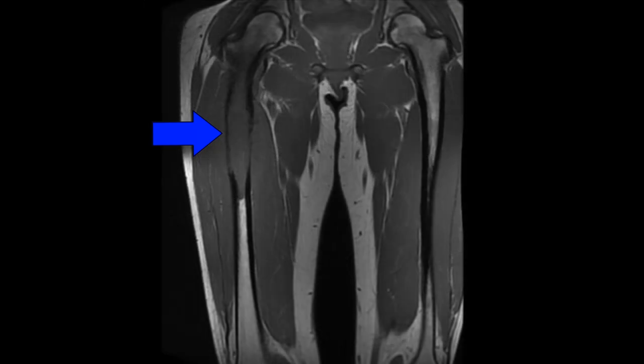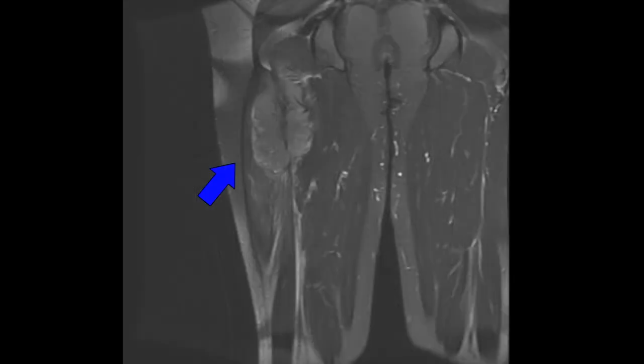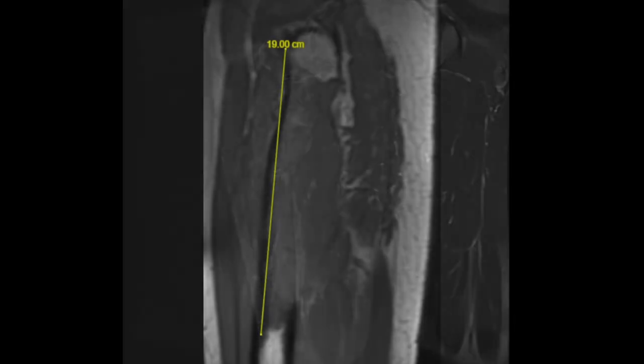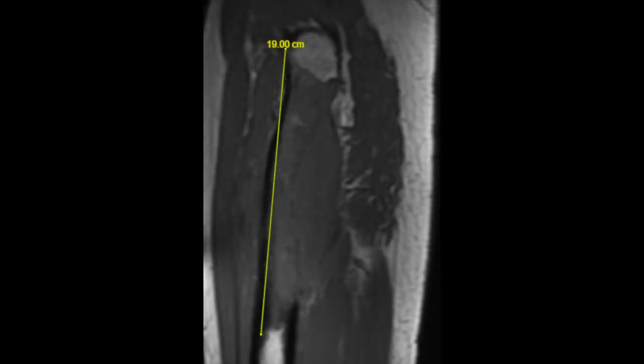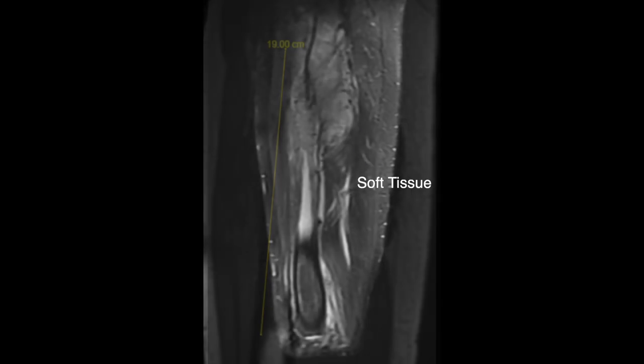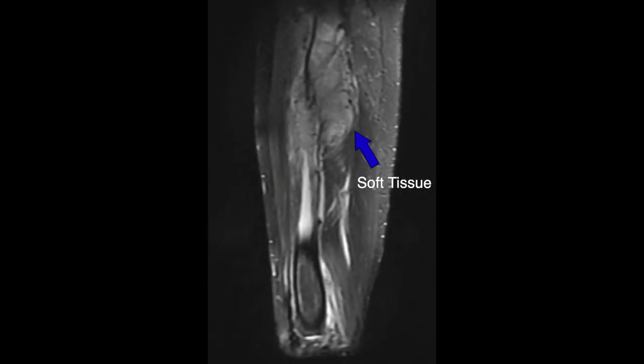MRI imaging showed an aggressive cortically destructive marrow-replacing lesion measuring approximately 20 centimeters craniocaudally in the right proximal femoral shaft, with possible extension of the mass into the femoral neck. MRI also revealed a soft tissue component almost fully encompassing the femur and anterior cortex.